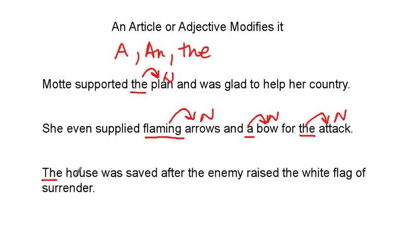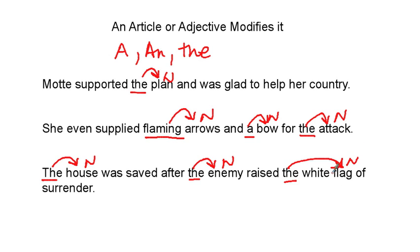Let's look at the next one. We have 'the' appearing several times. 'The house' — that's a noun. 'The enemy' — noun. 'The flag' — noun. And 'white' is also an adjective modifying 'flag,' adding more support. Those are the nouns that have adjectives or articles modifying them.